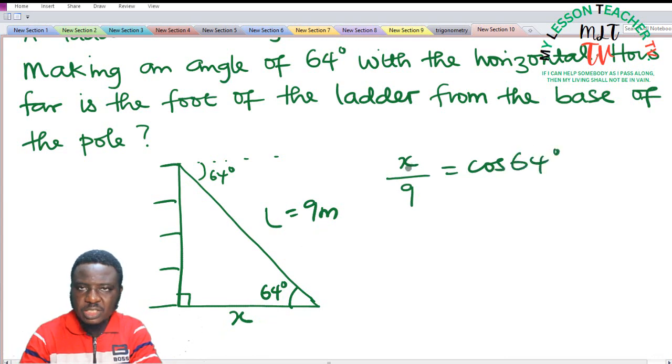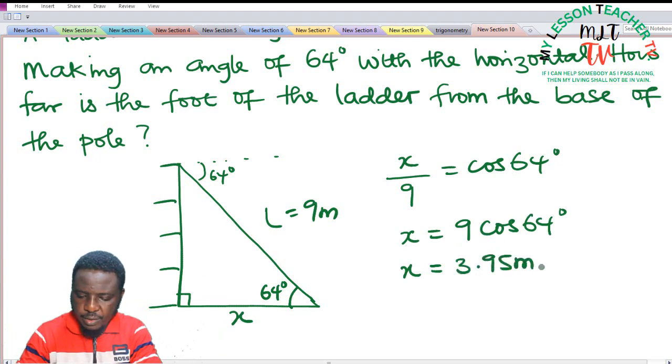We can make x the subject of the formula by multiplying both sides by 9, so that x now becomes 9 cos 64 degrees. You can use your calculator to find the value of 9 cos 64, and that equals 3.95 meters. So the distance between the foot of the ladder to the pole is 3.95 meters.